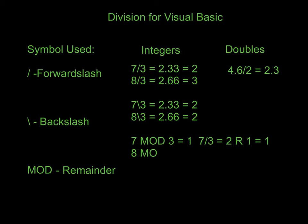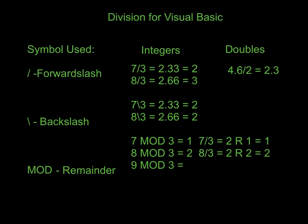Let's do it again for 8: 8 mod 3 equals 2. If we spread that out, 8 divided by 3 equals 2 remainder 2, so our mod is going to equal 2. It is also possible that if we do 9 mod 3, it's going to equal 0, because 9 divided by 3 equals 3 remainder 0, so our mod is going to be equal to 0.